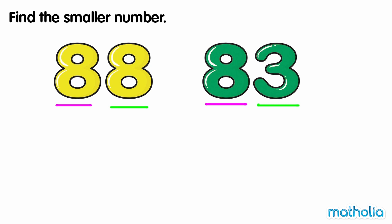Three is smaller than eight. So eighty-three is smaller than eighty-eight. Eighty-three is the smaller number.